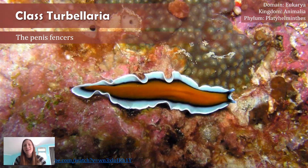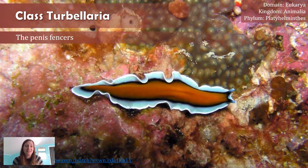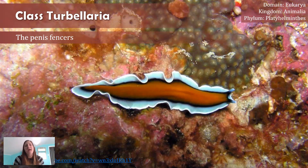Not every turbellarian does this — it's only a couple of different species. You may be wondering what I mean by penis fencing. A lot of flatworms, not just in Class Turbellaria but among other classes as well, are something called hermaphroditic, meaning these organisms have both the ability to create eggs and create sperm — they have both male and female reproductive organs.